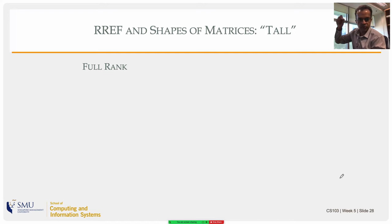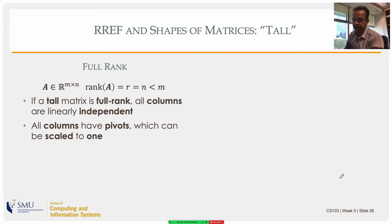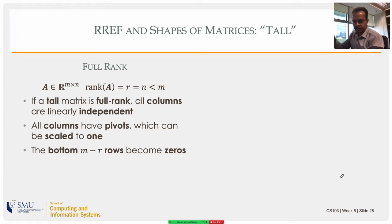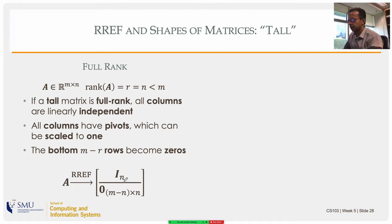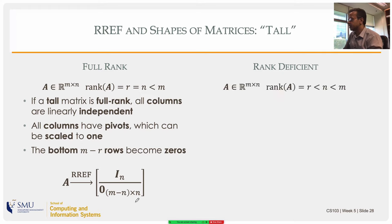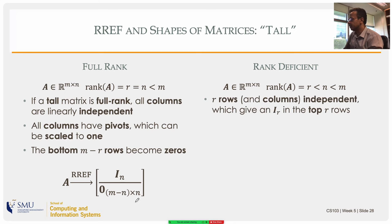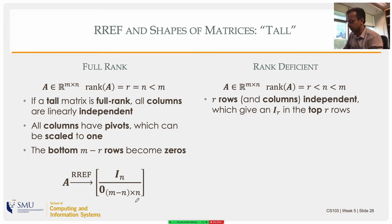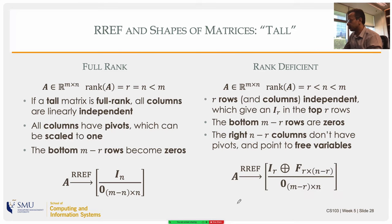For a tall full-rank matrix, the columns are linearly independent so all columns have pivots scaled to one. Using each pivot eliminates elements above and below. The result is an identity matrix of size n at the top with m − n zero rows below — a clean separation of the identity block and zero rows.